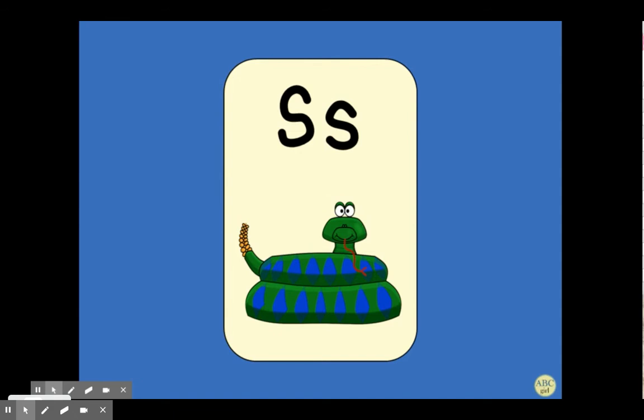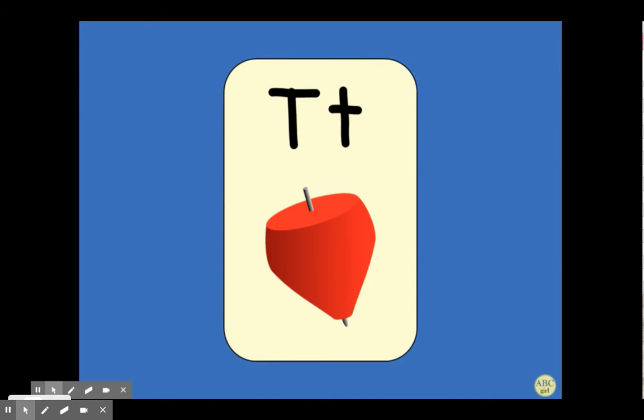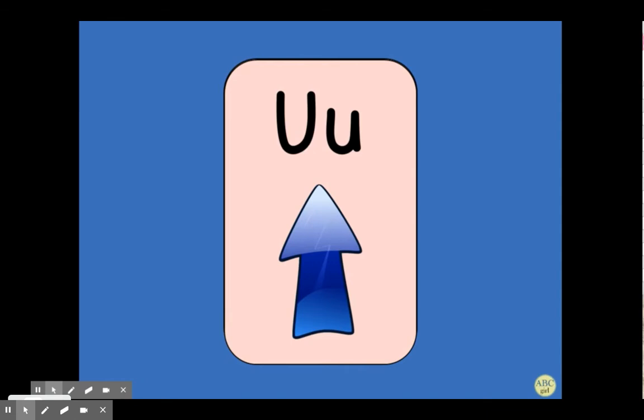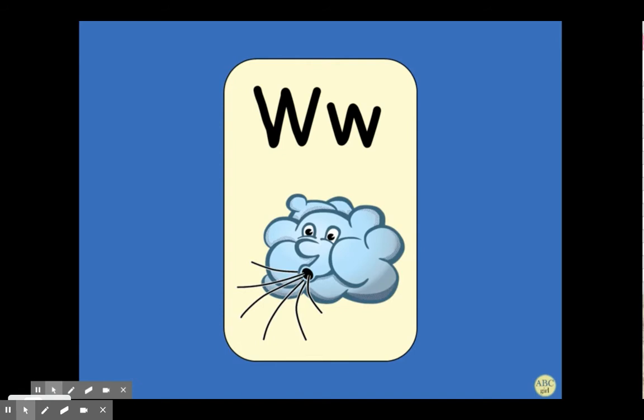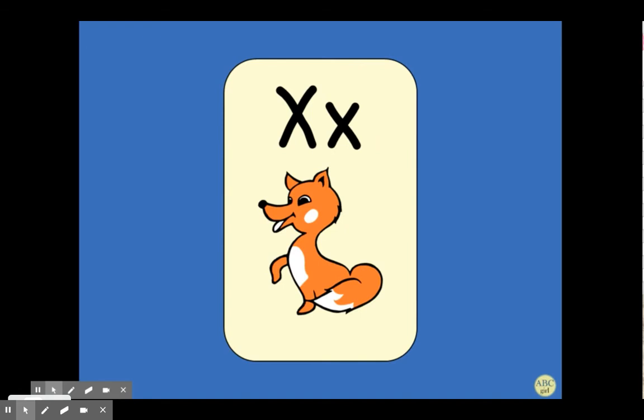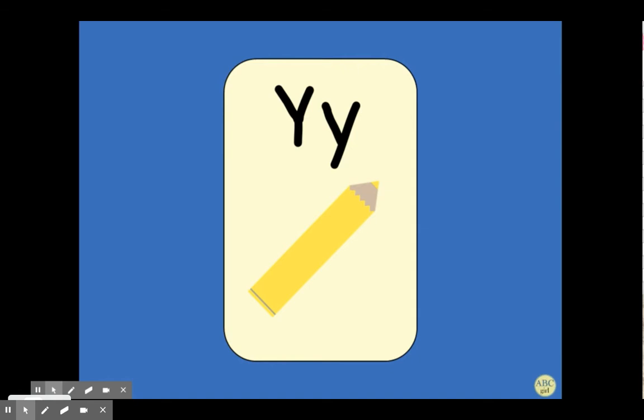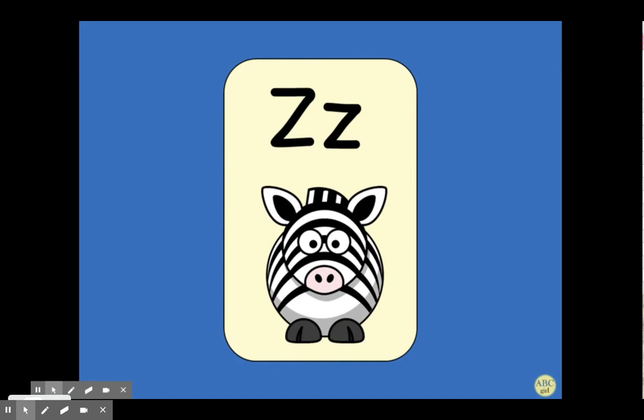S, snake, /s/. T, tap, /t/. U, up, /u/. V, van, /v/. W, wind, /w/. X, fox, /x/. Y, yellow, /y/. Z, zebra, /z/.